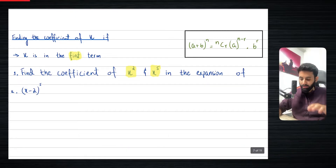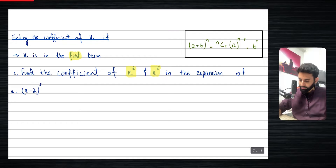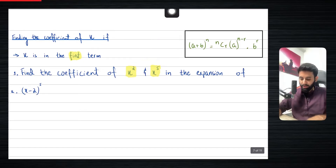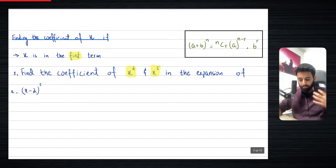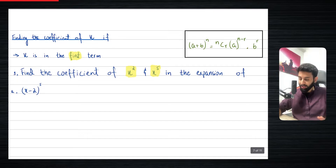They revolve around basically finding the coefficient of x. Now, a binomial theorem could be of three types: one could be that you have x in the first term, one could be that you have x in the second term, and there's a third possibility — you could have x in both the terms.